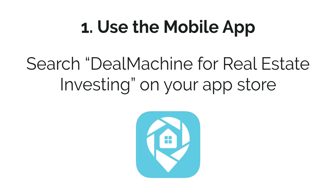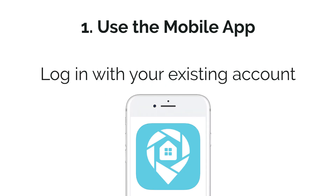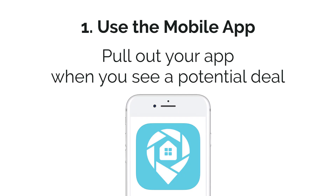So step one is downloading it to your mobile device. Take out that iPhone or Android, and look for DealMachine for real estate investing, and enter your account information. DealMachine was set up so that when you see a property, you could add it. So pull out that app when you see potential properties.